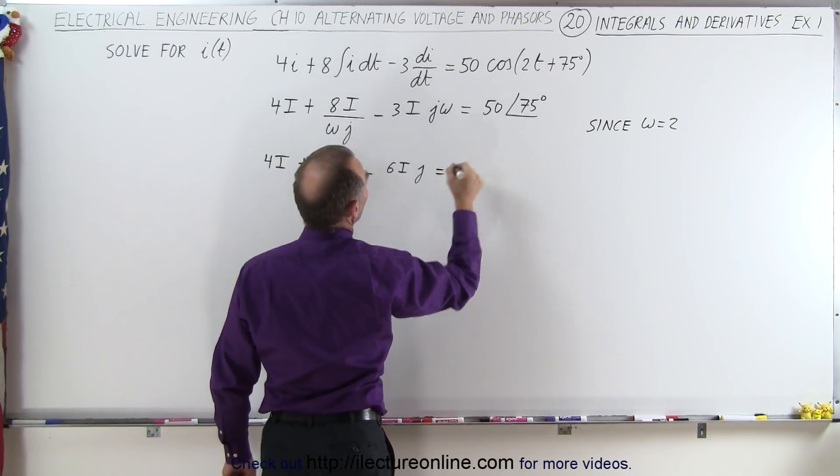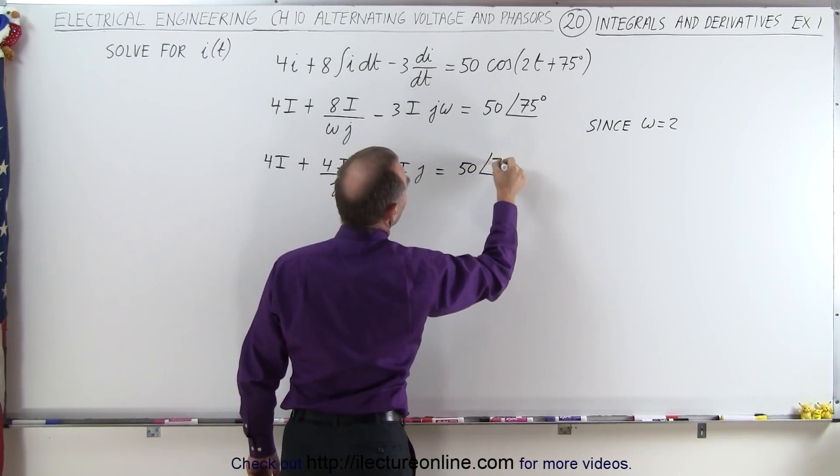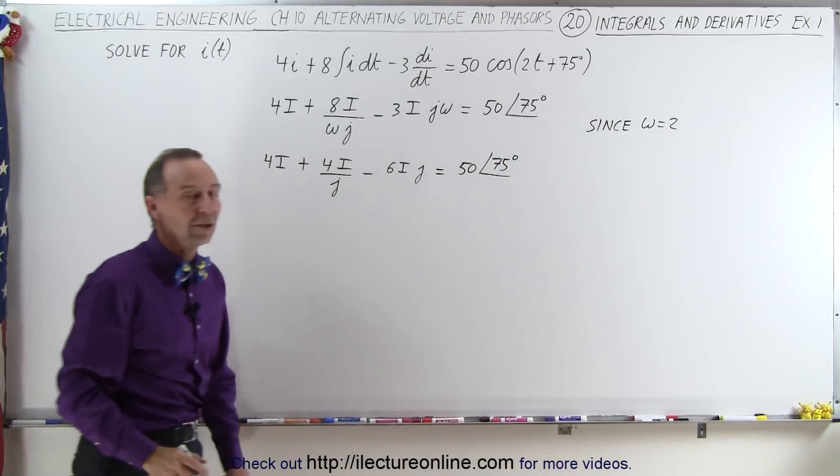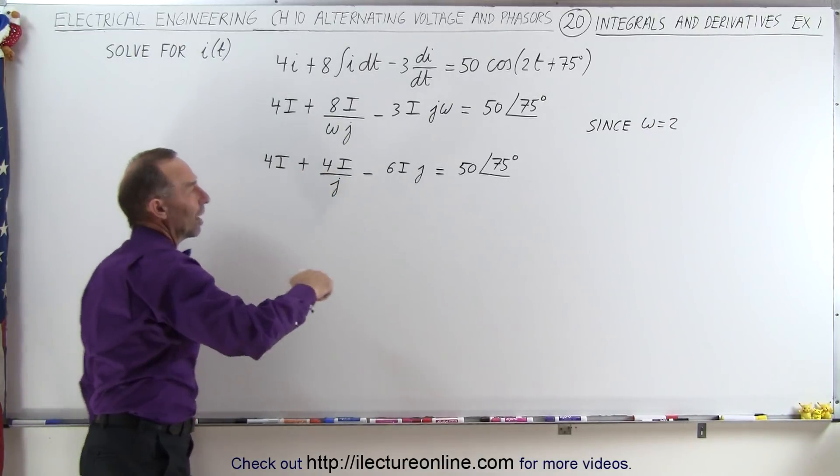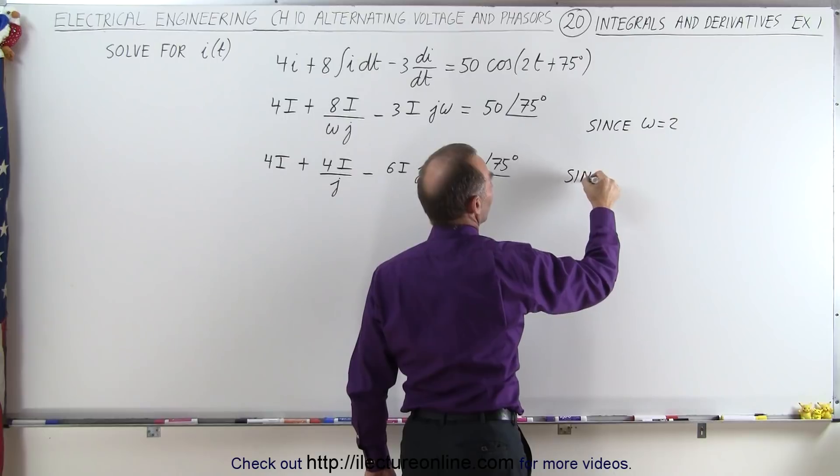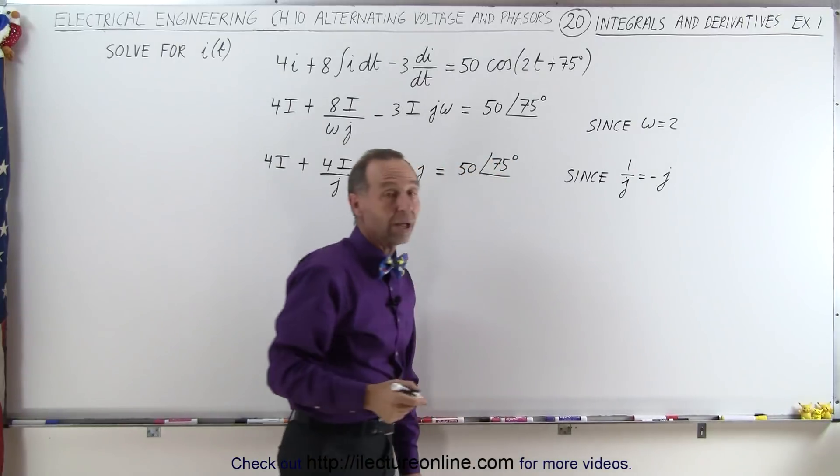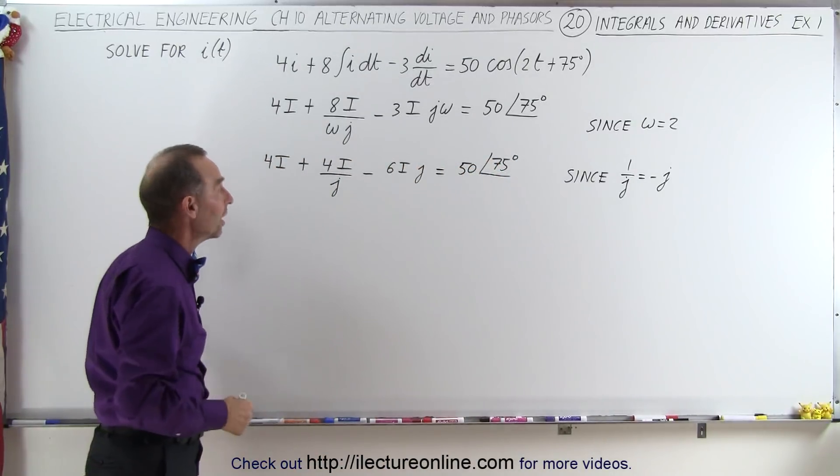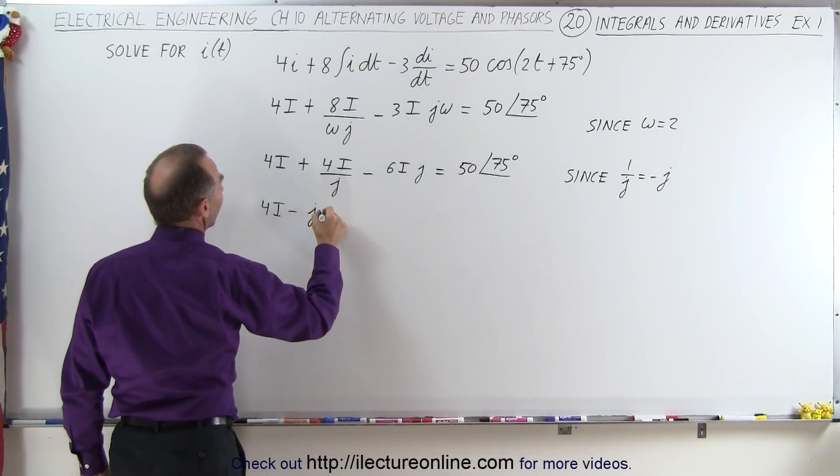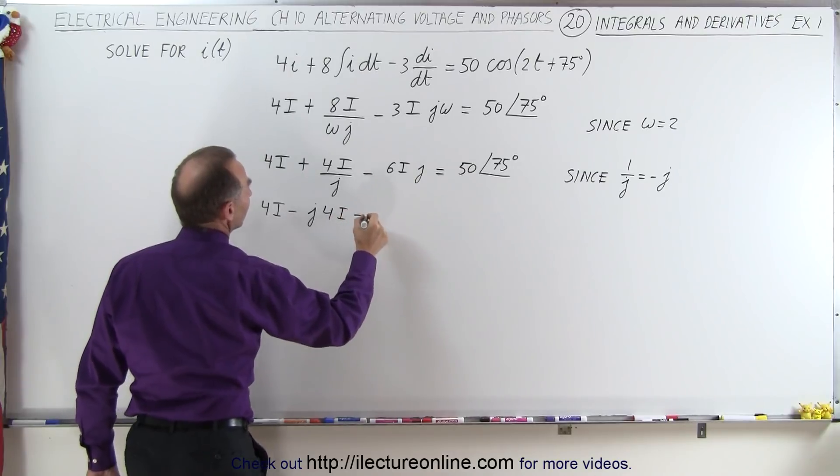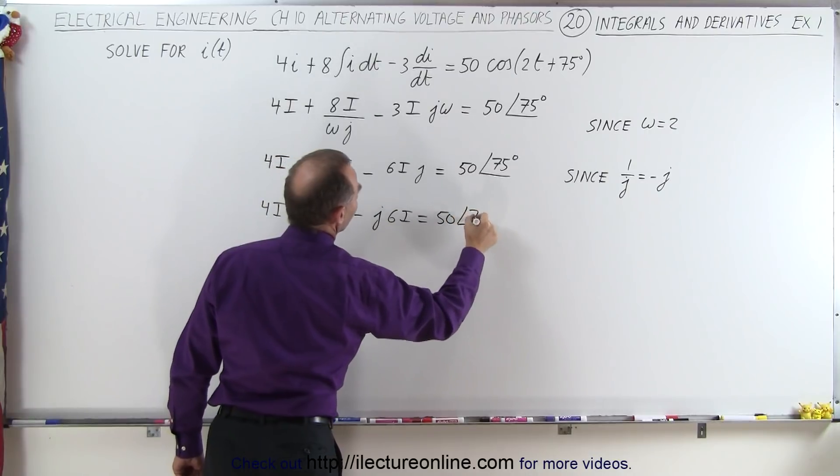And that equals 50 for magnitude and 75 degrees for the phase angle. The next thing we want to do is get rid of the j in the denominator here. And so we can say that since 1 over j is equal to minus j, if we multiply both the numerator and the denominator by j, we get minus j, so we can then say that this is equal to 4i minus j times 4i minus j times 6i is equal to 50 and phase angle of 75 degrees.